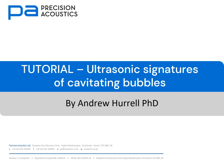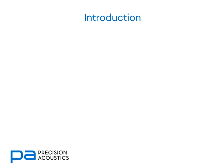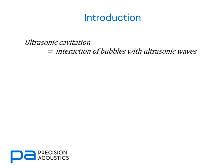Hello and welcome to this tutorial on the ultrasonic signatures of cavitating bubbles. When we refer to ultrasonic cavitation, we're talking about the interaction of bubbles with ultrasonic waves. Ultrasonic cavitation can be loosely characterized into two categories: non-inertial cavitation, which often occurs at lower pressure levels and involves shape changes but no collapse of a bubble, and inertial cavitation, which often occurs at higher pressure amplitudes where there is a violent bubble collapse. We'll discuss both of these types of cavitation in this tutorial.